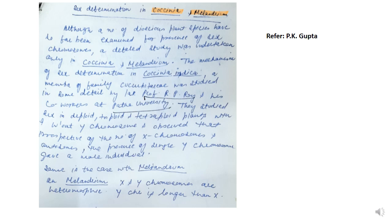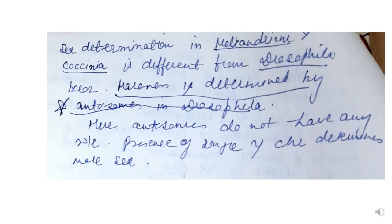The same is the case in Melandrium. In Melandrium, X and Y chromosomes are heteromorphic and the Y chromosome is longer than X. The mechanism of sex determination in Melandrium and Coccinia is different from Drosophila, because in Drosophila maleness is determined by autosomes — as discussed in part 2 of the lecture series. But here in Melandrium and Coccinia, autosomes do not play any role; the presence of a single Y chromosome determines sex.